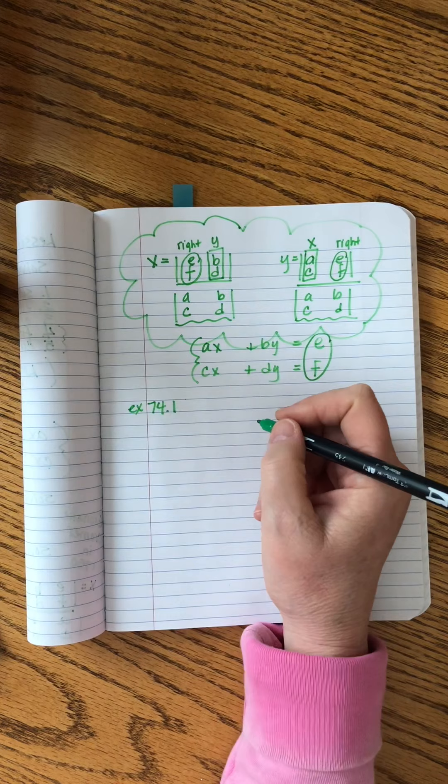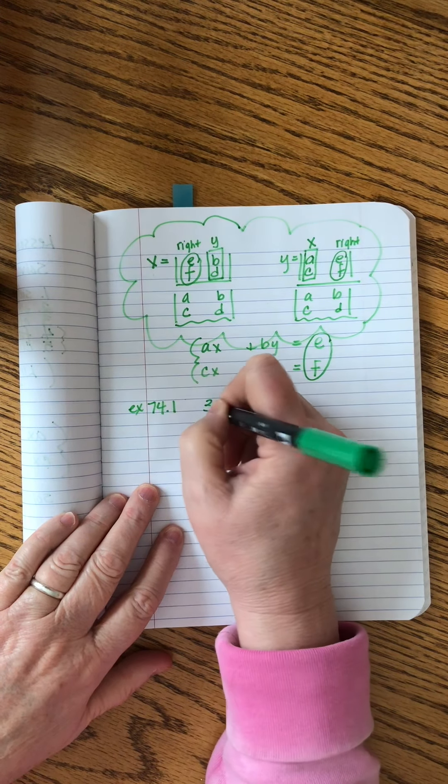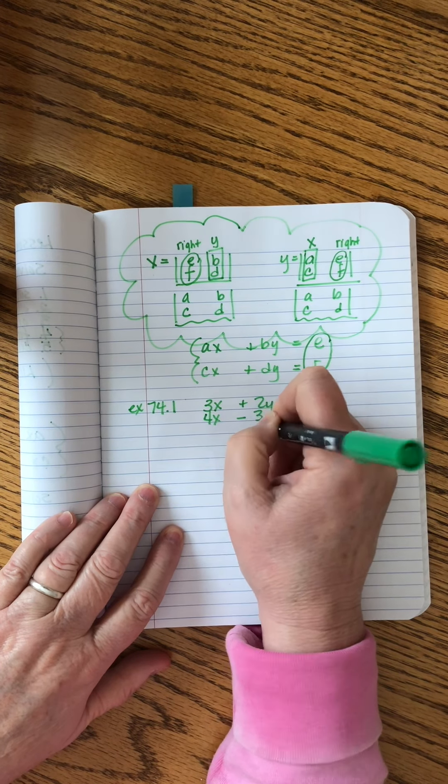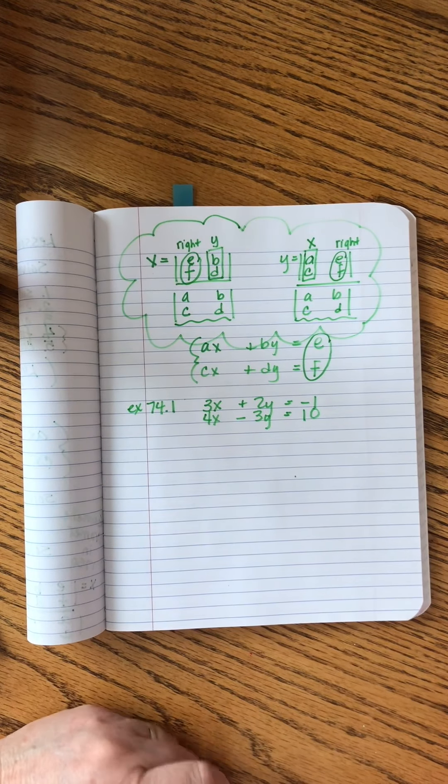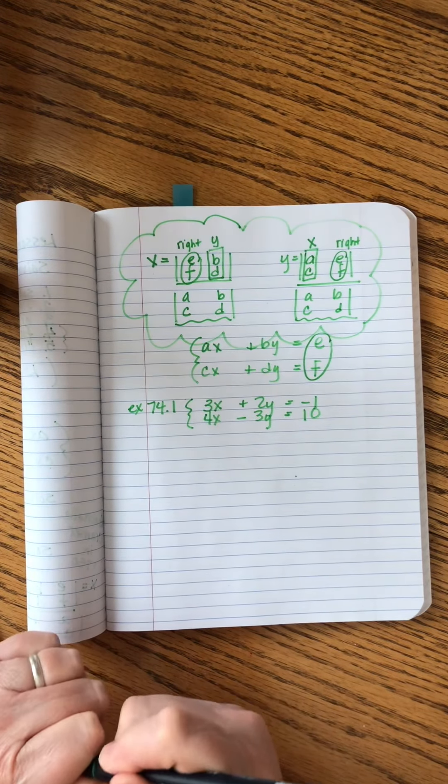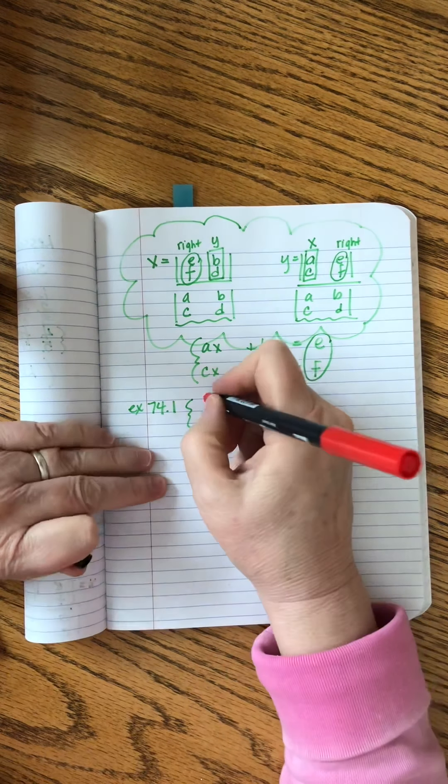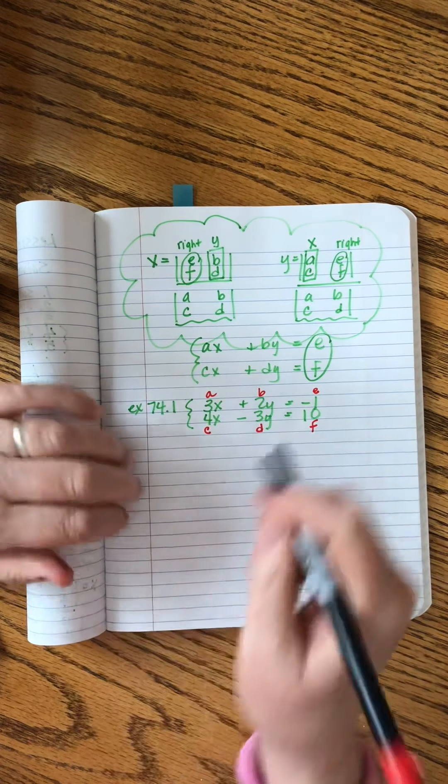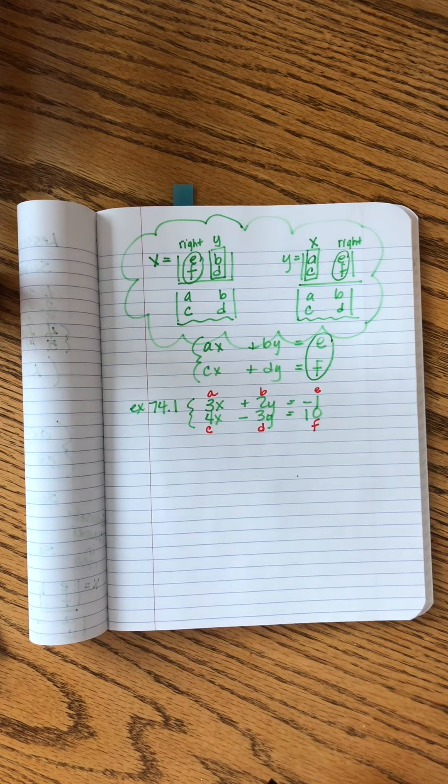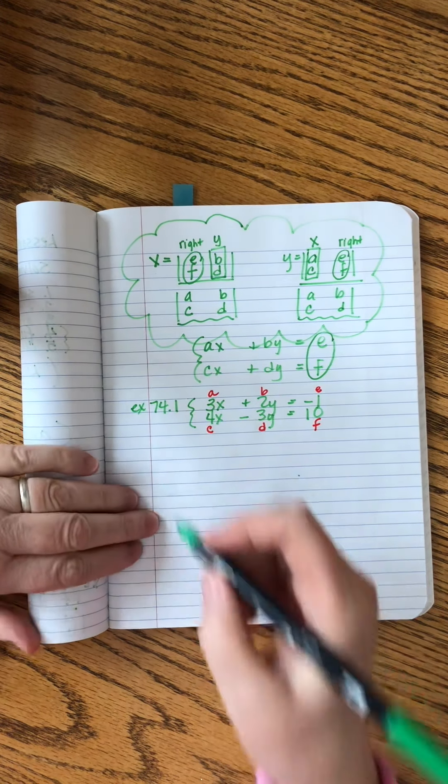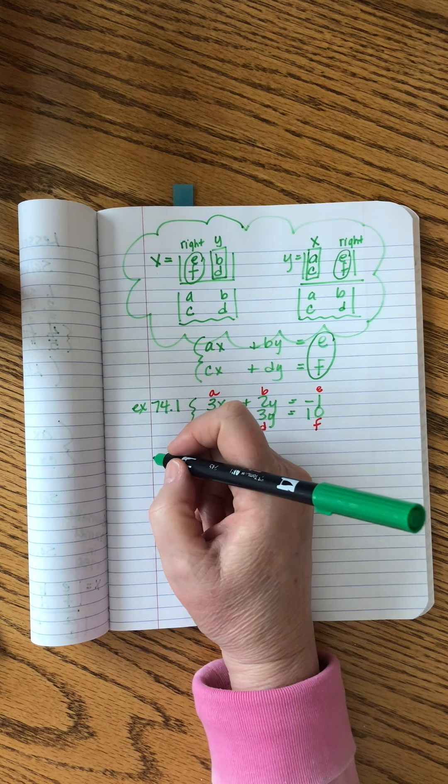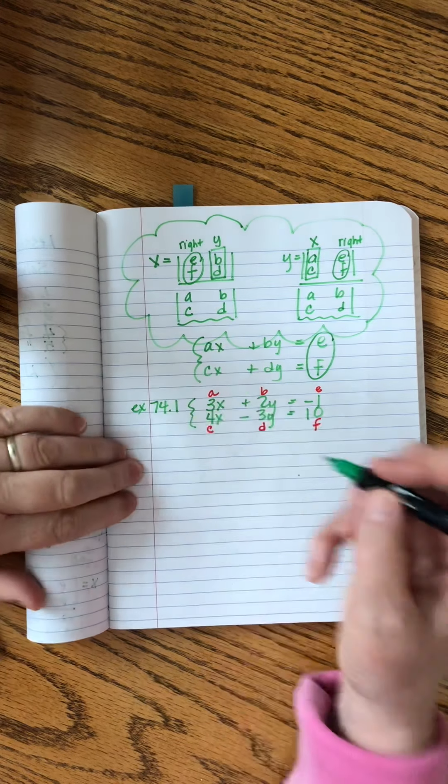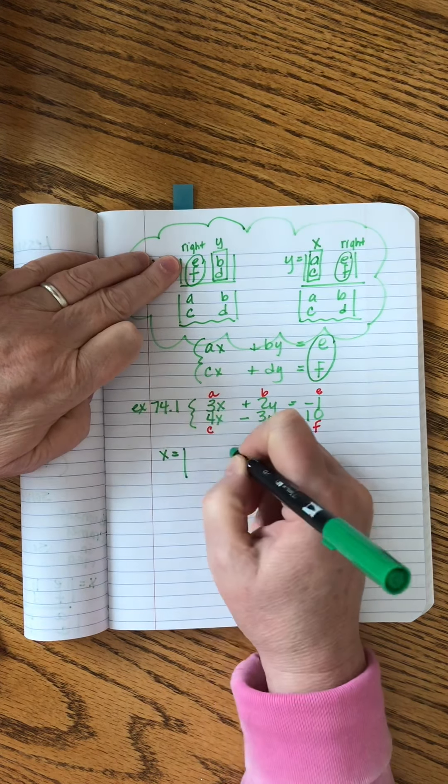74.1. Use Kramer's rule to solve. John gives us a system of equations. That looks familiar, right? We've been messing around with things like this forever. What I like to do is in a contrasting color, write A, B, C, D, E, and F. Now, when I start pulling those values to arrange in the matrices to use Kramer's rule, I will not completely lose my mind. It says to solve for both of them. Sometimes it tells us to solve for just x, sometimes just y, and other times it says solve. So we'll do both.